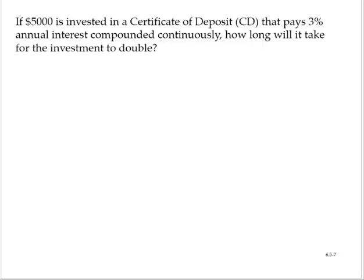But since I see the phrase compounded continuously, that tells me I need to use the other form of the formula, which is A equals P times e to the rt, where e is the Euler number, which is about 2.718.